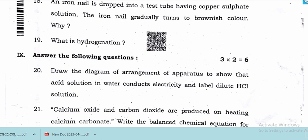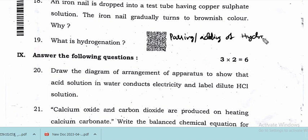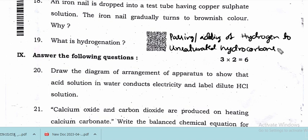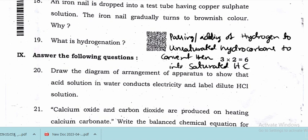What is hydrogenation? Hydrogenation means the passing or adding of hydrogen gas to unsaturated hydrocarbons to convert them into saturated hydrocarbons. This is the correct definition of hydrogenation.